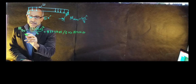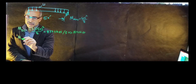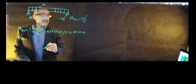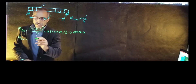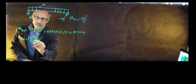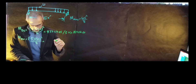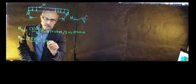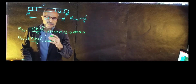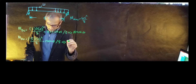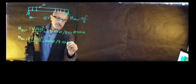That was M_DC, the dead load moment. Now for the wearing surface, M_DW: same formula, WL squared divided by eight. With 0.5 kips per foot, that's 0.5 times 50 squared divided by eight, which comes out to 156 kip-foot. Again distributed over five girders, dividing by five gives 31.2 kip-foot per girder.